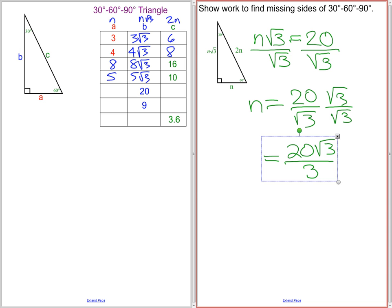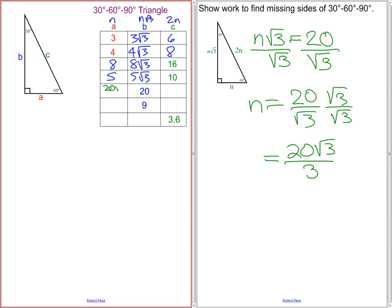And since that is as simplified as it can go, we can write that in. So we have 20 root 3 over 3.